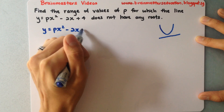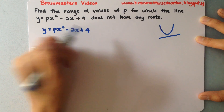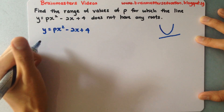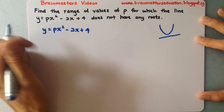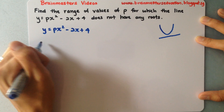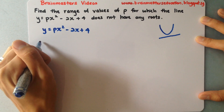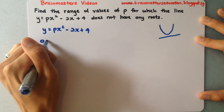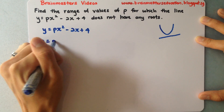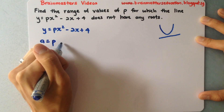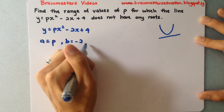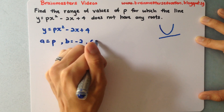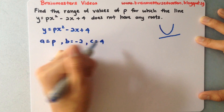This is the equation of the line. I have to identify what my a, b, and c values are. So a will be p, b will be negative 2, and c will be 4.